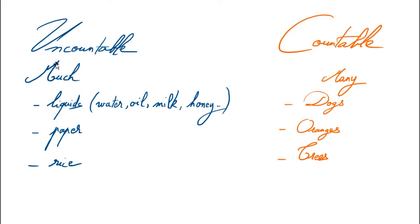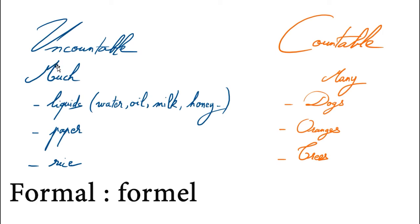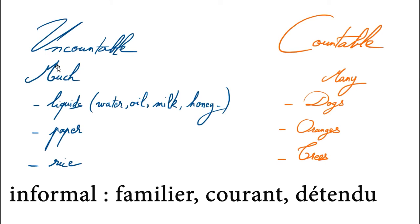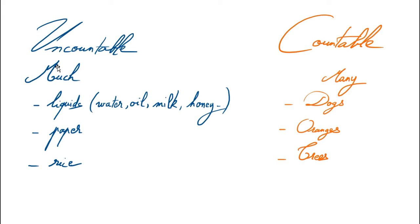MUCH can sound incredibly formal. Formal means formel — a little strict and protocolaire. The opposite is INFORMAL, meaning familier, more relaxed. If I say I HAVE MUCH MILK — ooh là là, it sounds like I'm a police officer. This is a little bit too much.